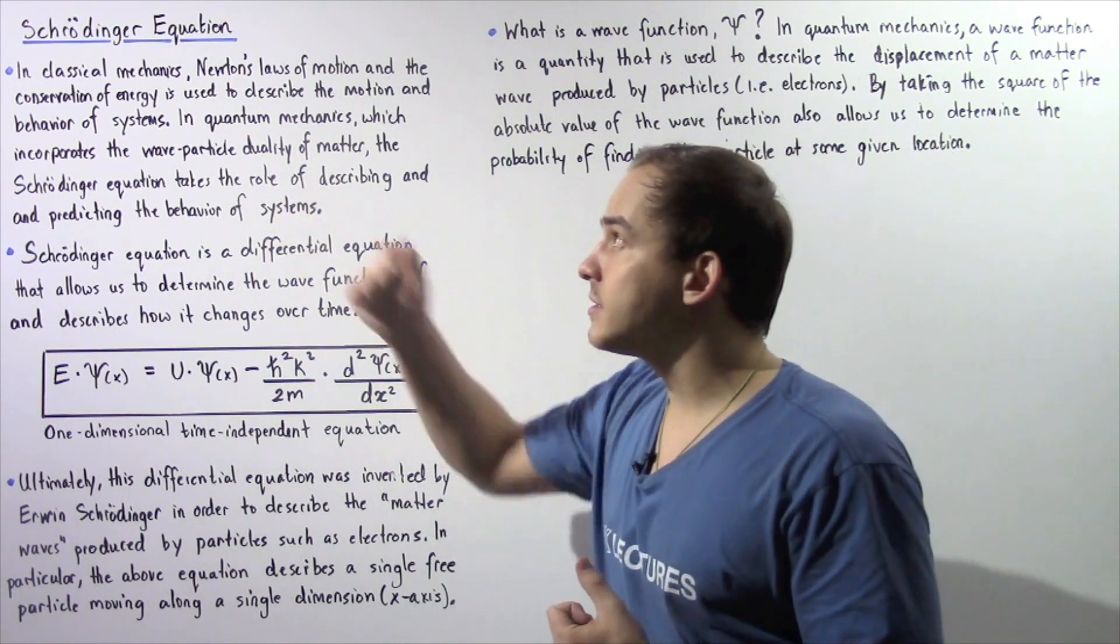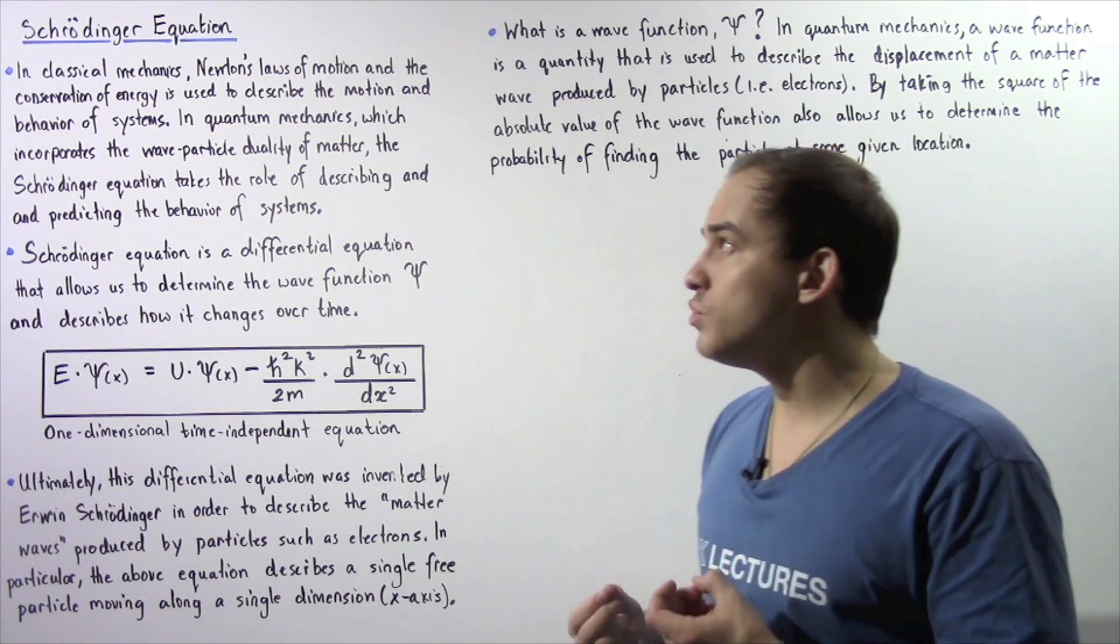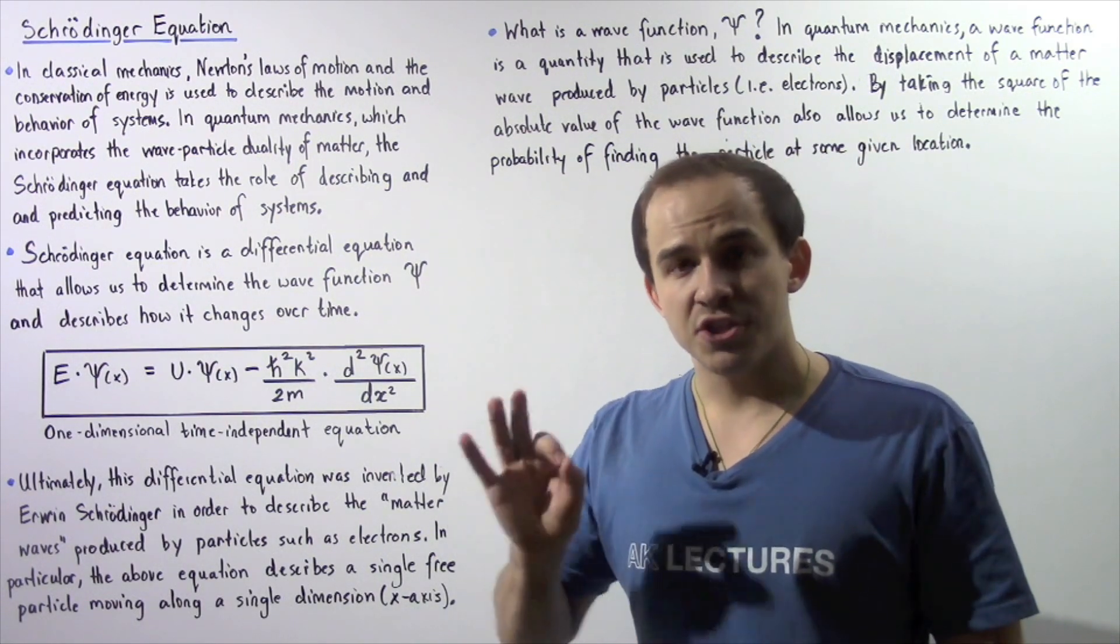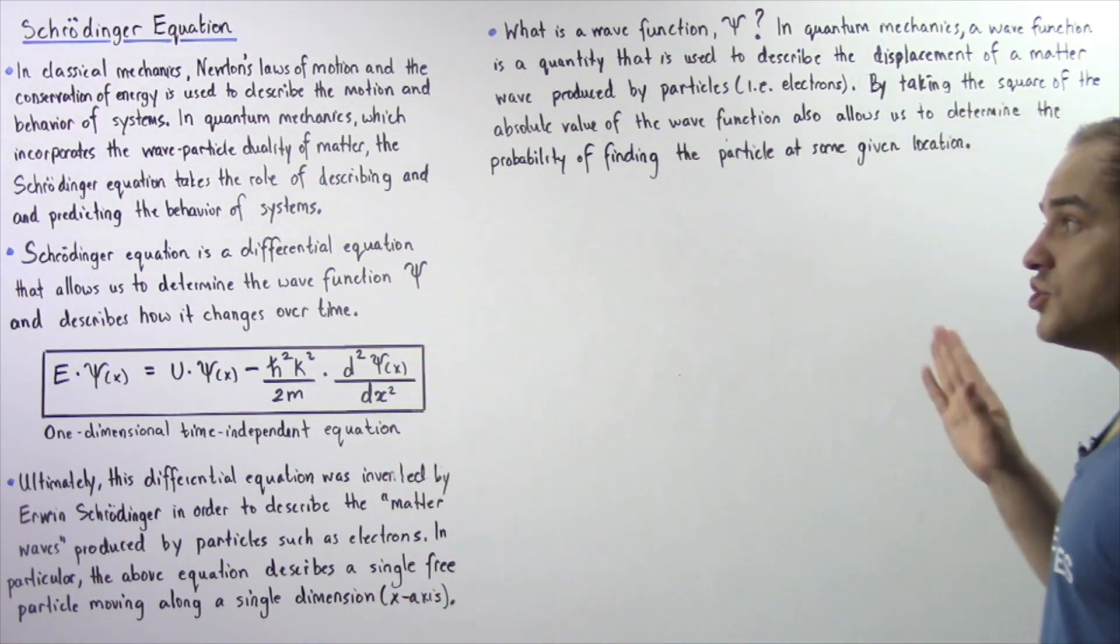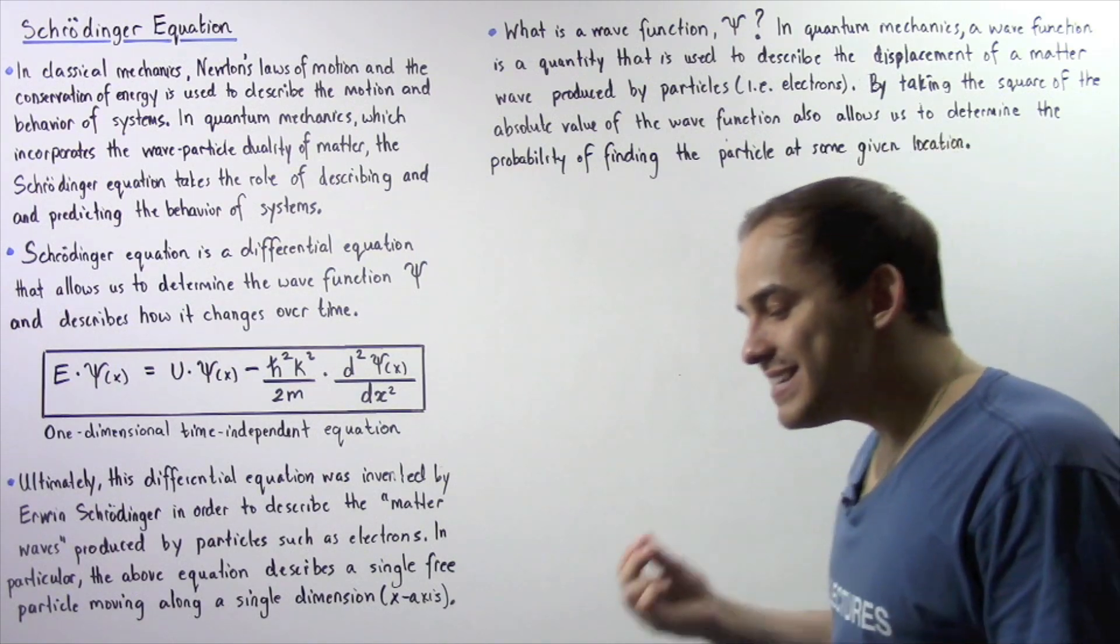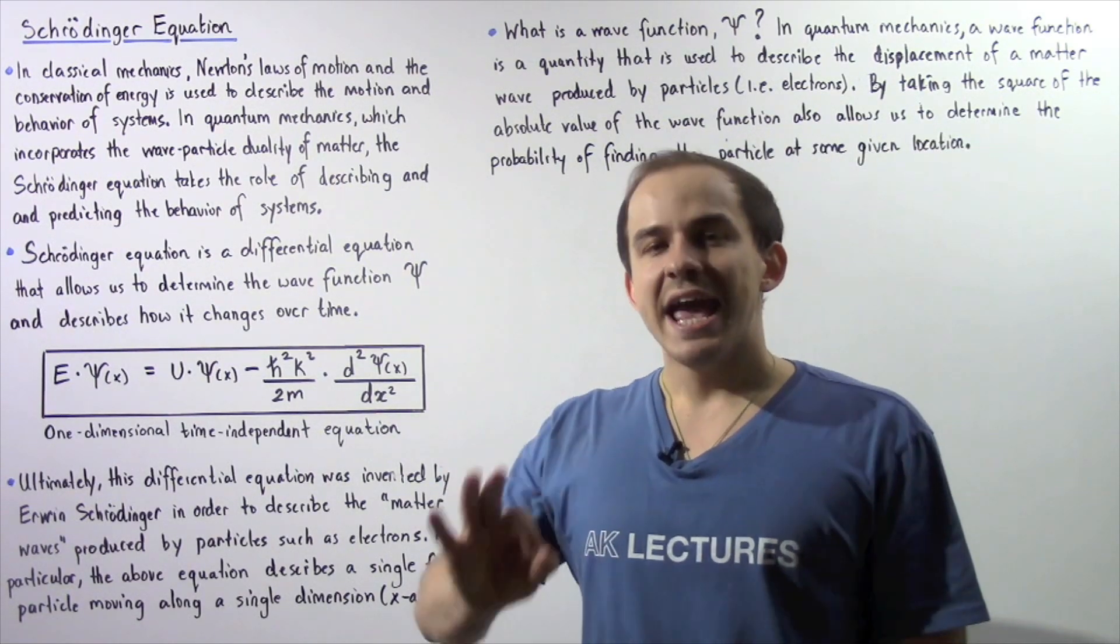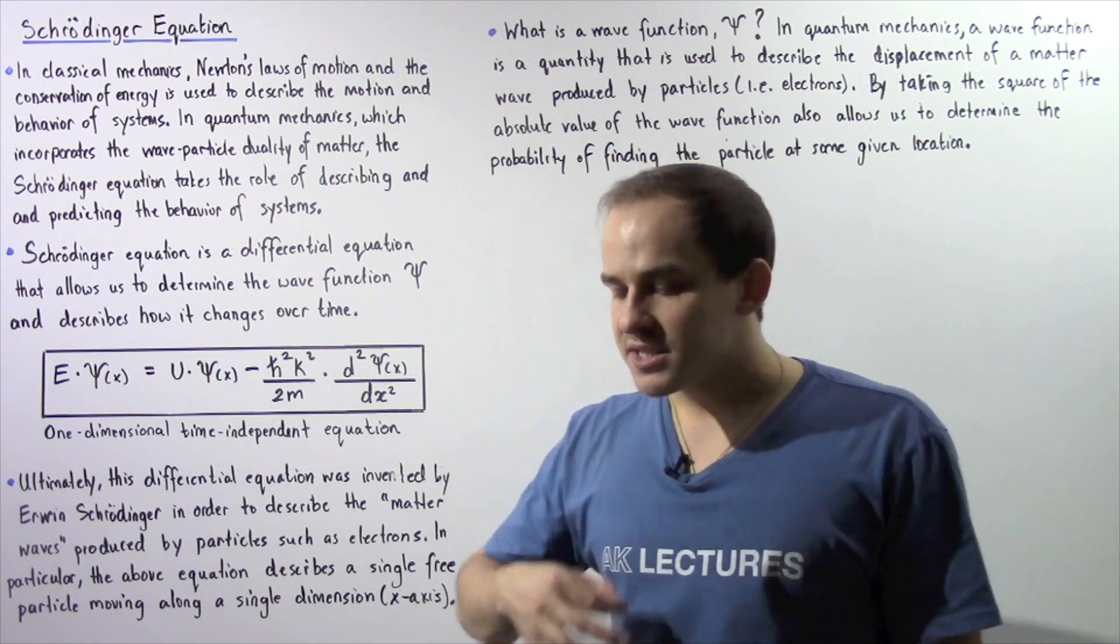Now unlike in classical mechanics, which basically uses a deterministic theory, quantum mechanics uses a statistical theory. It uses a statistical approach.